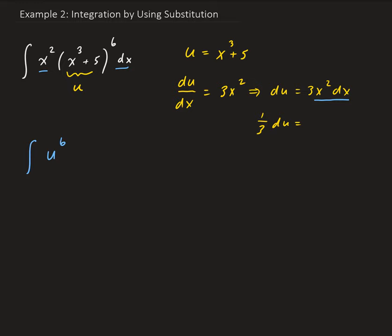So we can isolate x squared dx by dividing both sides by 3. So we have 1/3 du equals x squared times dx. That means we have u to the 6th times 1/3 du.